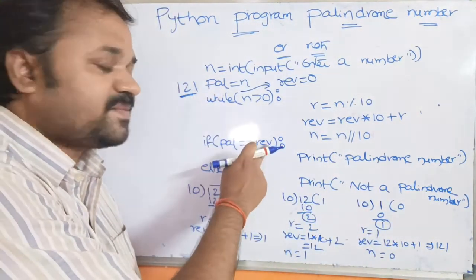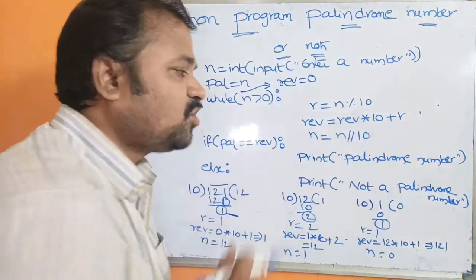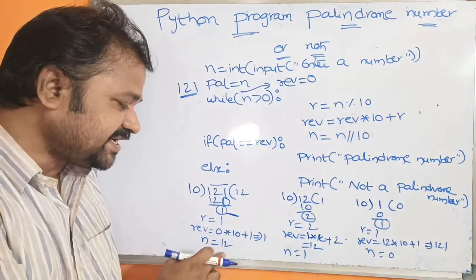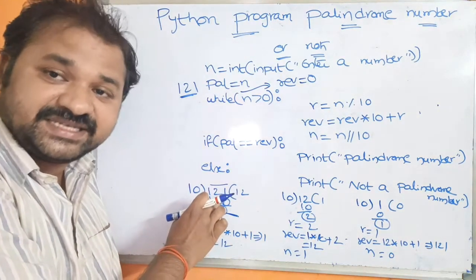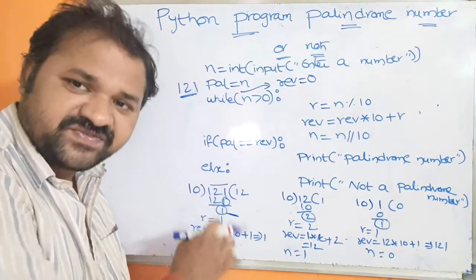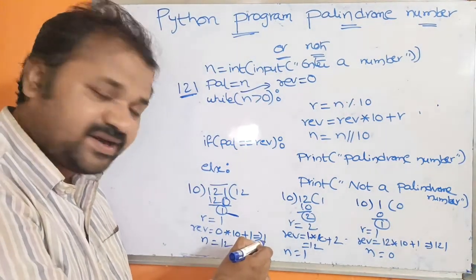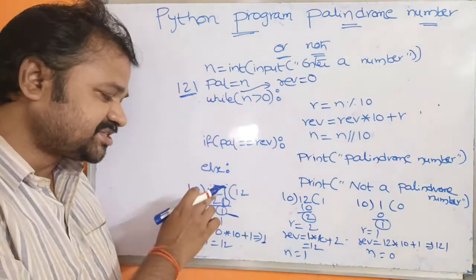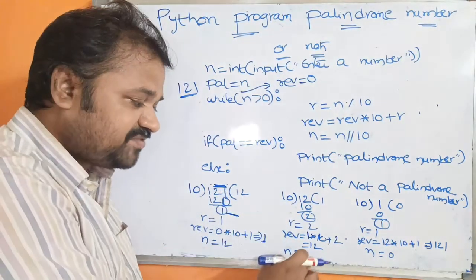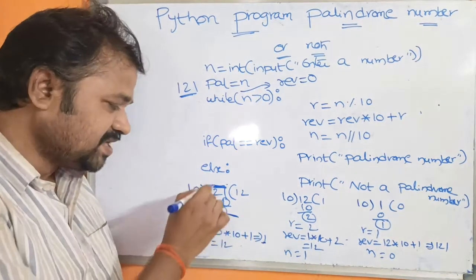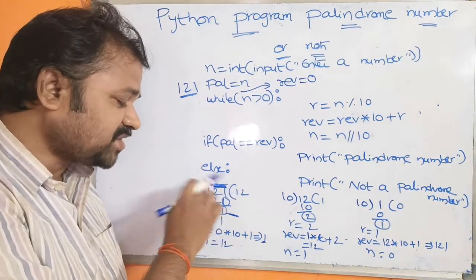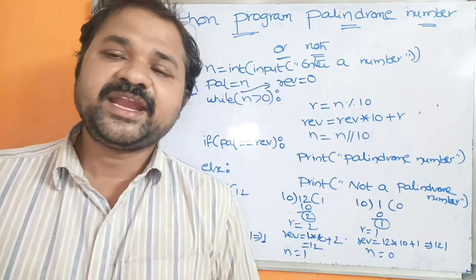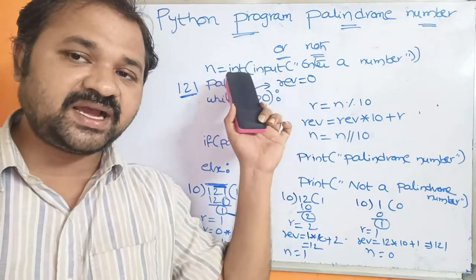Since pal == rev (121 == 121), the condition is true, so the output is "palindrome number". If you observe the reversal logic: after the first iteration, you get the reverse of the last digit (1). After the second iteration, you get the reverse of the last 2 digits (12 reversed is 12... wait, 21). After the third iteration, you get the reverse of 121, which is 121. In this way we can check whether a number is palindrome using a while loop.